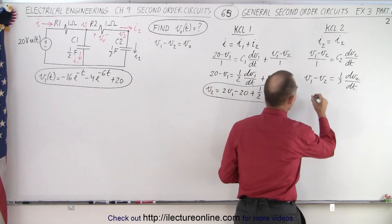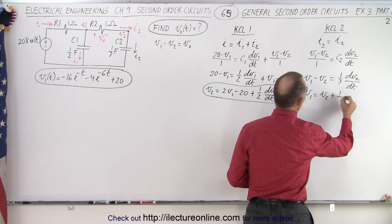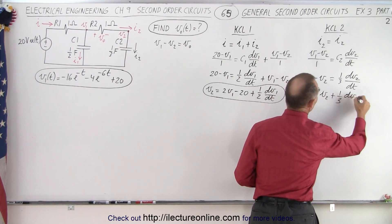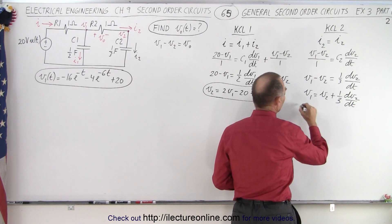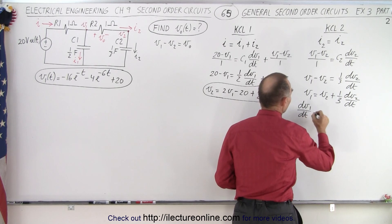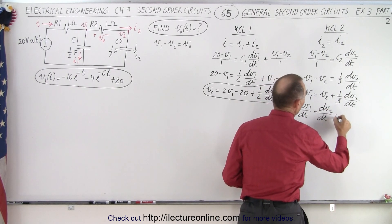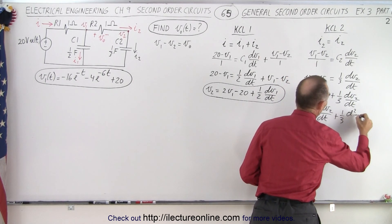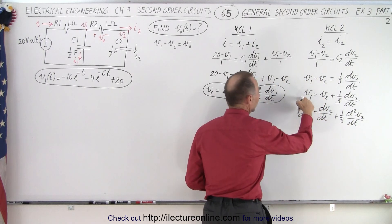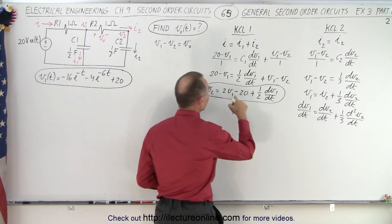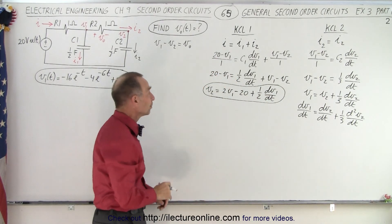So here we can say that V1 is equal to V2 plus one-third dV2/dt. And if we take the derivative of this, we can then say that dV1/dt is equal to the derivative of V2 with respect to time, plus one-third the second derivative of V2 with respect to time. And now we have V1 and the derivative of V1 with respect to time that we can plug in, and we'll have an equation of only V2.